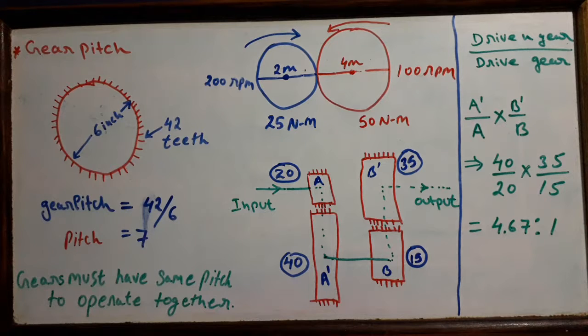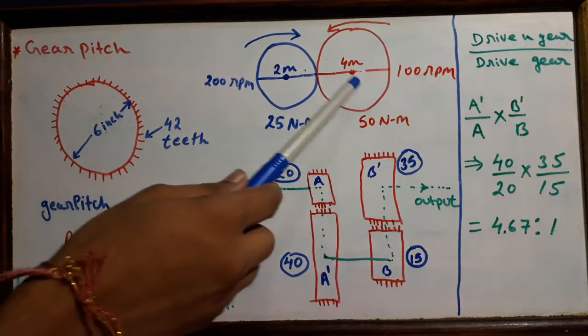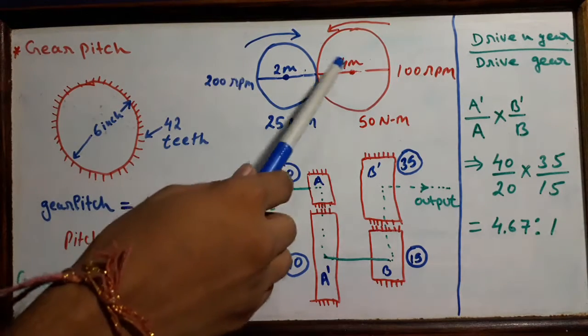Gears must have the same pitch to operate together. If two gears are matched together, their pitch will be the same. We have two gears matched here, and both of these gears are rotating in opposite direction.